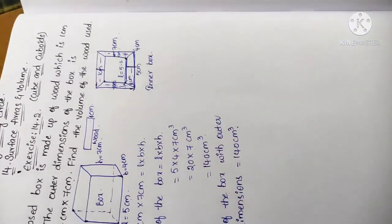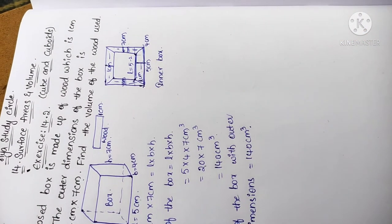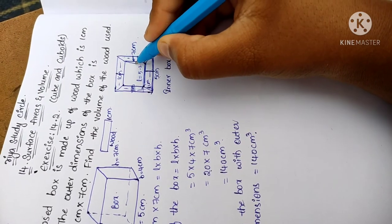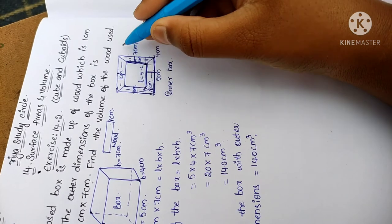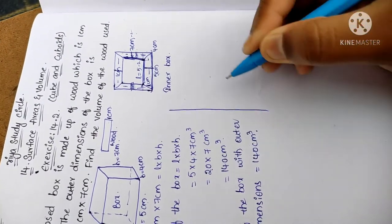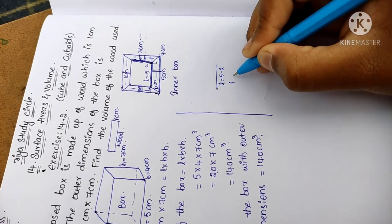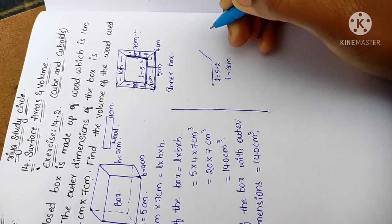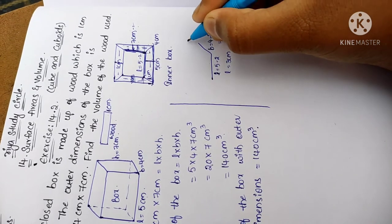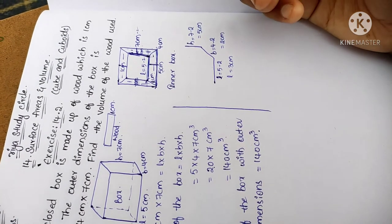We subtract 1 cm + 1 cm = 2 cm from each dimension. So inner length L = 5 − 2 = 3 cm. Similarly, inner breadth B = 4 − 2 = 2 cm. For height, 1 cm on each side gives 1 + 1 = 2 cm, so inner height H = 7 − 2 = 5 cm. These are the inner dimensions of the box.